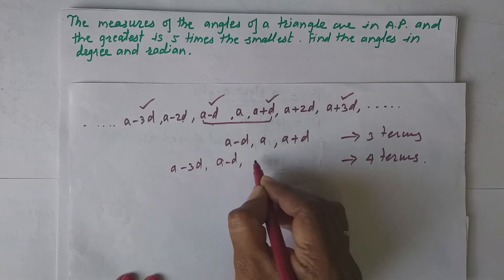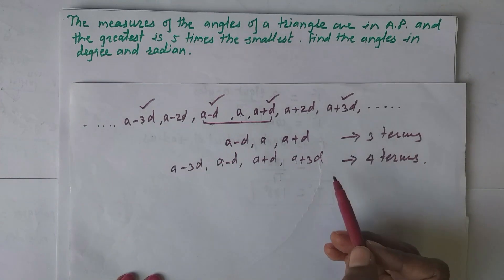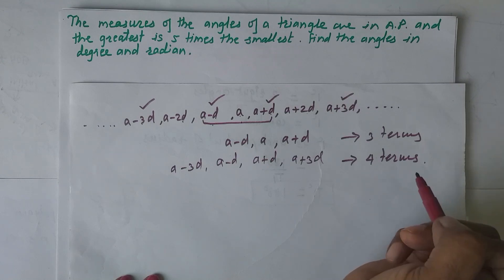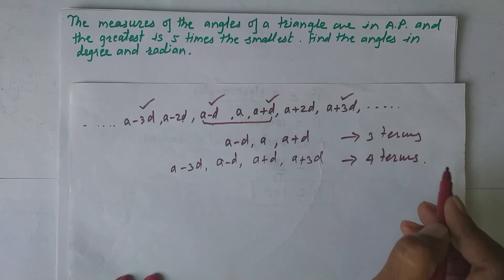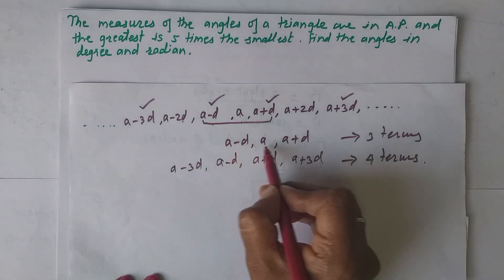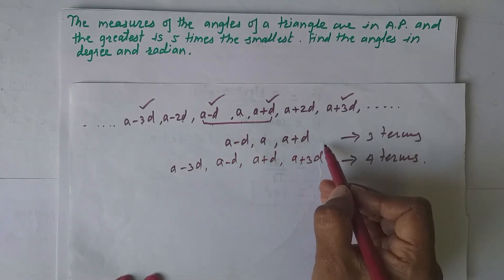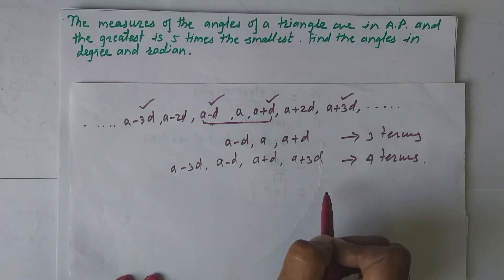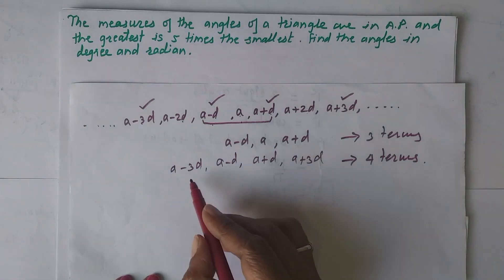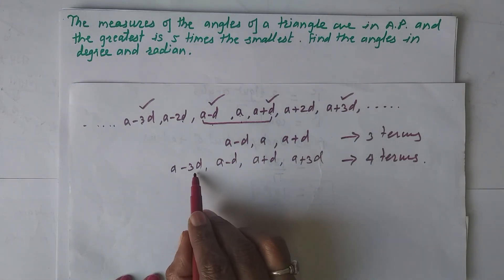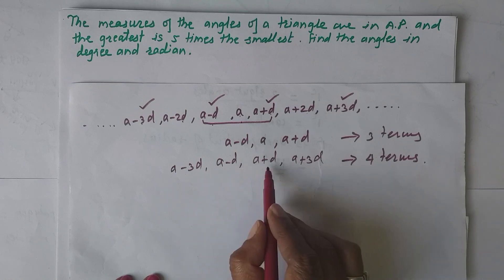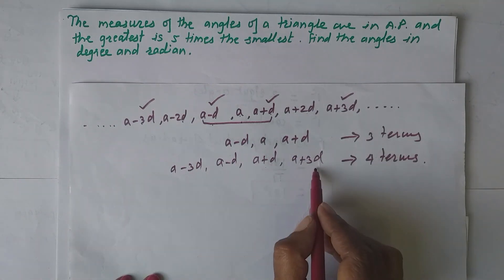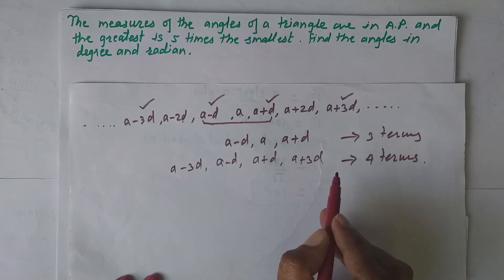If we have to find the angles of a triangle, there are three angles, so we take three terms: a−d, a, a+d. If we have to find the angles of a quadrilateral, there are four angles, so we take four terms: a−3d, a−d, a+d, and a+3d.